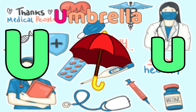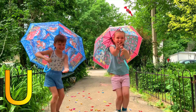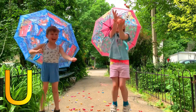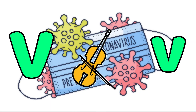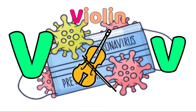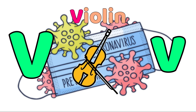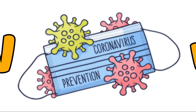U is for Umbrella. U, Umbrella. U, Umbrella. V is for Violin. V, Violin. V, Violin. V, Violin.